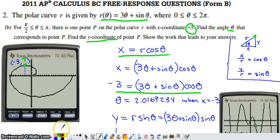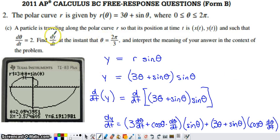In Part C, there's a particle traveling along the polar curve. Its position at time t is (x(t), y(t)) such that dθ/dt = 2. We want to find dy/dt at the instant when θ = 2π/3 and interpret the meaning. From Part B, we have y = r sin θ, which becomes y = (3θ + sin θ)sin θ.